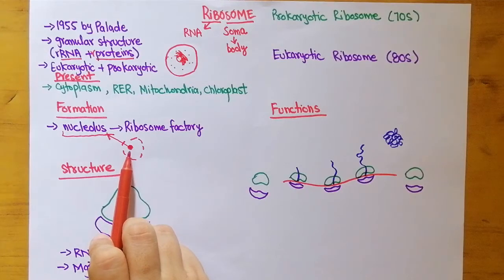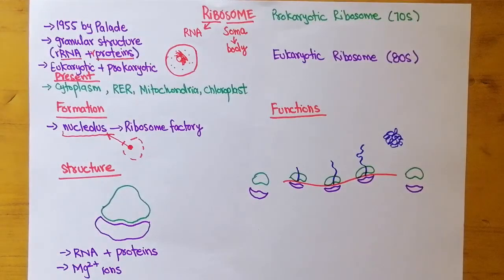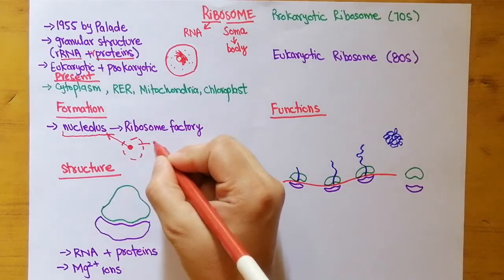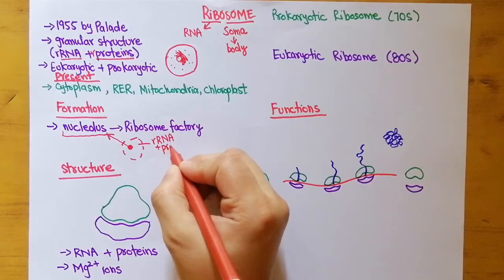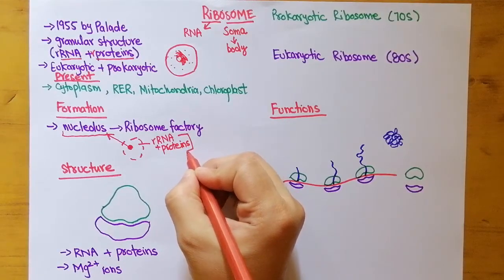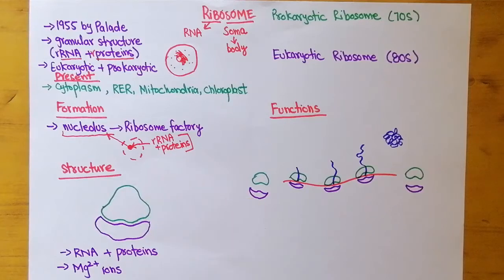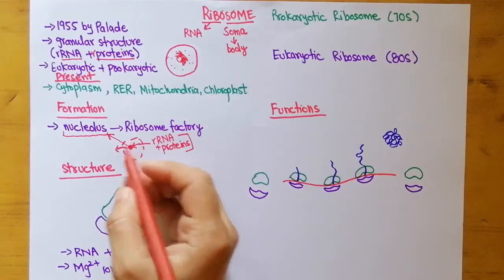This site — the nucleolus — is responsible for the production of ribosomes. The DNA in the nucleus will form ribosomal RNA. This ribosomal RNA, along with ribosomal proteins, are combined and assembled inside the nucleolus. After the assembly of ribosomal RNA and proteins into ribosomes, these ribosomes are sent through the nuclear pores to the cytoplasm.